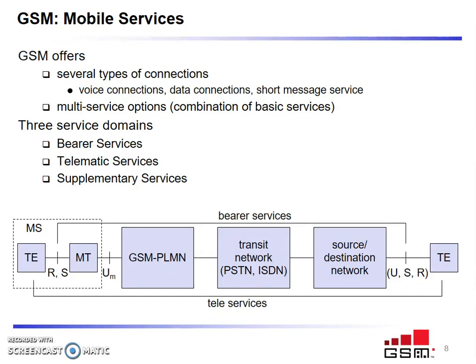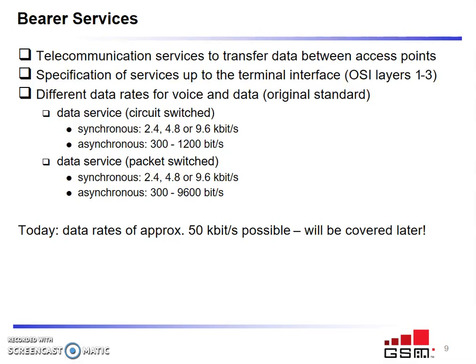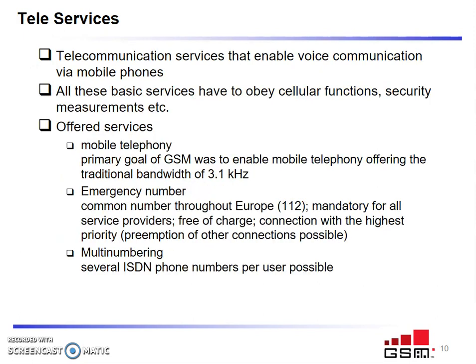The transit network is connected to the source or destination network. Interfaces carry data and control information. Bearer services provide data transmission between access points with different data rates for voice and data communication. Data service can be circuit switched or packet switched, and can be synchronous or asynchronous.